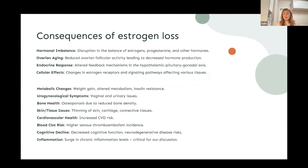The consequences of estrogen loss include hormonal imbalance, which the body is not accustomed to, resulting in large hormonal fluctuations. Ovarian aging is another factor. The endocrine feedback mechanism also changes and no longer works the same way it used to. On a cellular level, we don't have as many estrogen receptors as before because there is not enough estrogen in the body, so signaling pathways are altered, affecting most of our tissues.